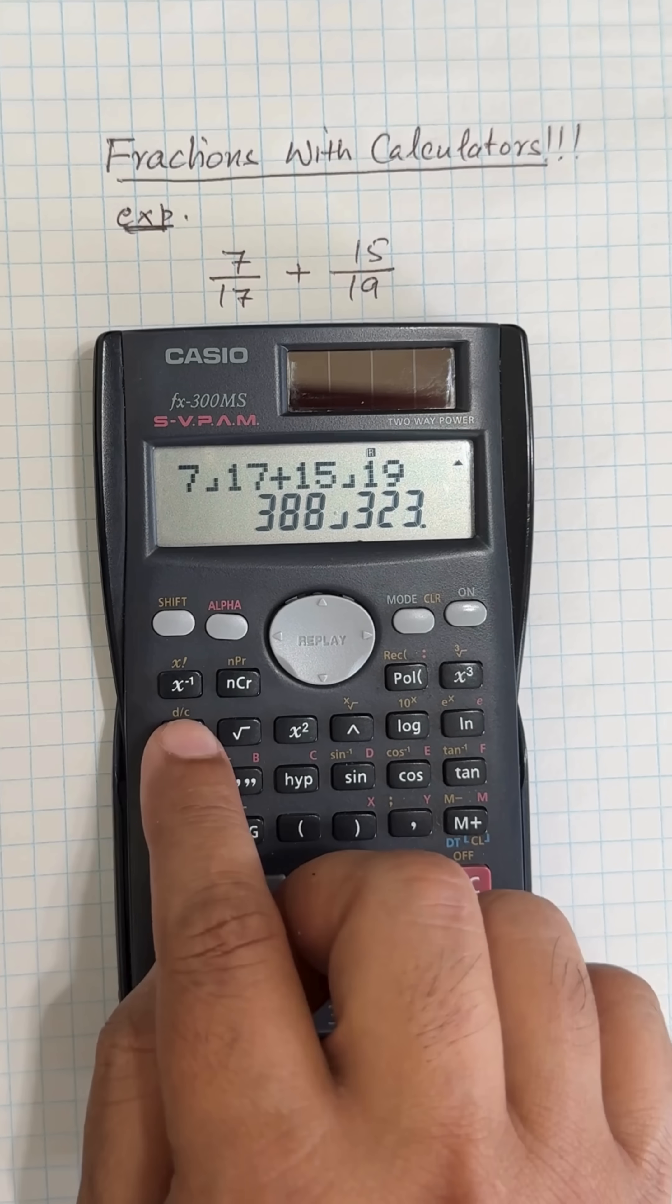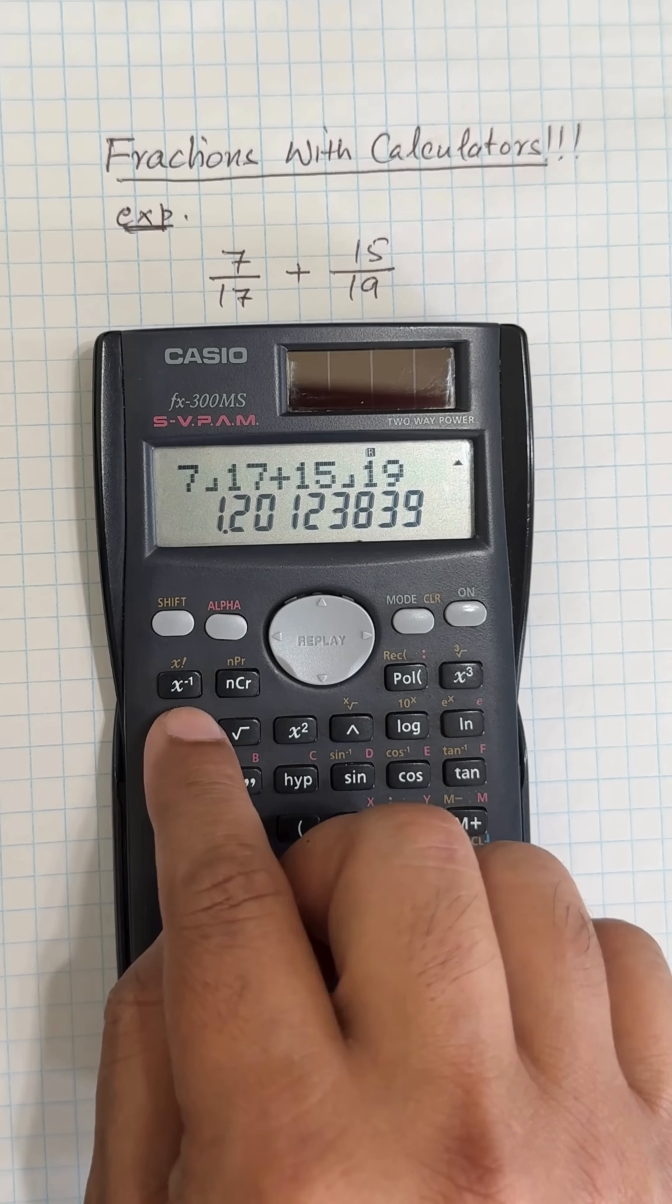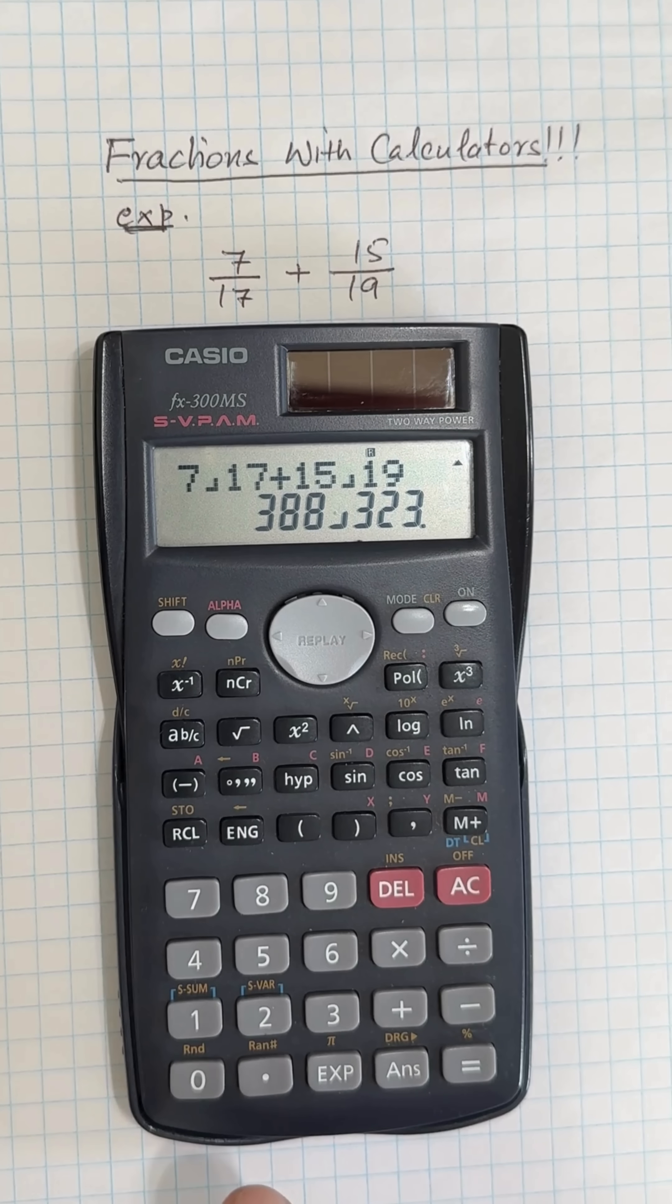If you press this button again, you will get the decimal answer. If you want to go back to the mixed fraction, it's right there again. If you want to change to improper, do it. I hope it will help.